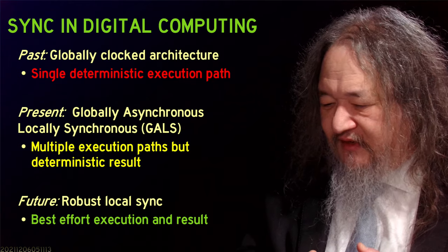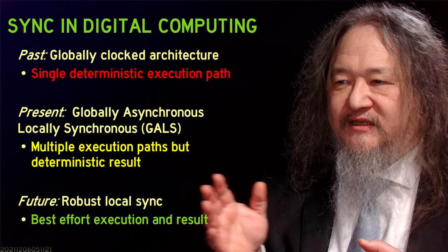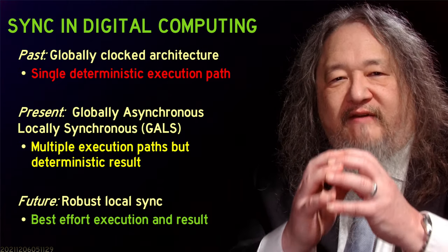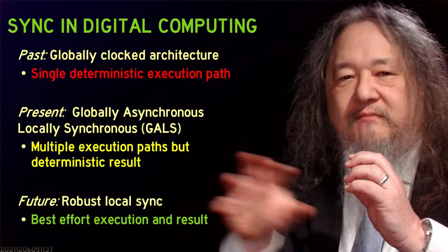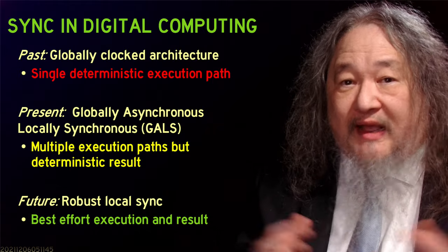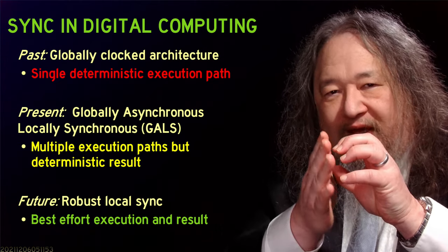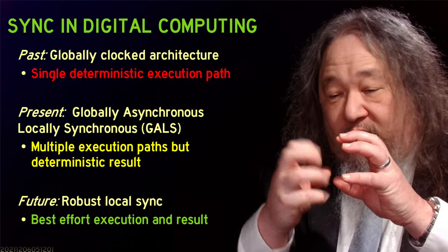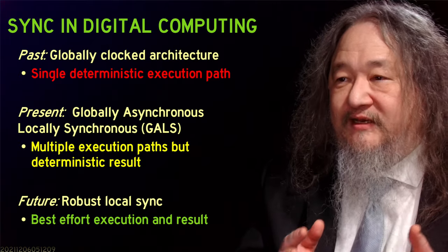Most of the computers and smartphones you deal with these days are no longer single globally clocked. Instead they're called globally asynchronous, locally synchronous — GALS. They have a bunch of small clock domains: there's a clock for the CPU, a clock for the memory, and a clock for the communication buses running between them. But those clocks are not coordinated at some higher master level. So when one clock domain meets another, you have to have a synchronization border — some additional mechanism to deal with the fact that one might be halfway through a tick while the other is now firing.